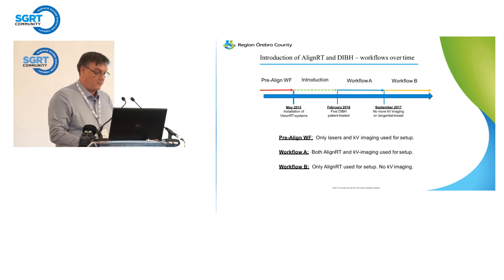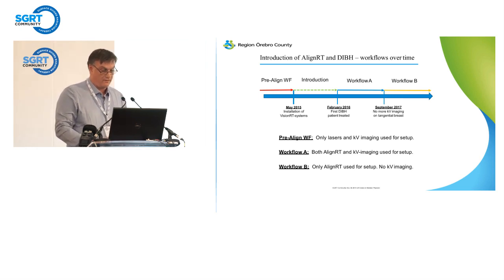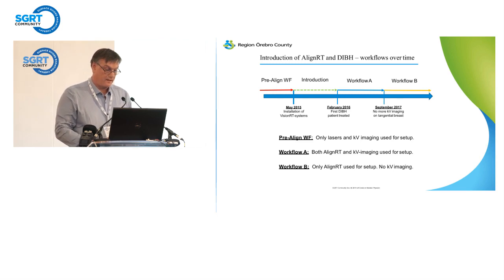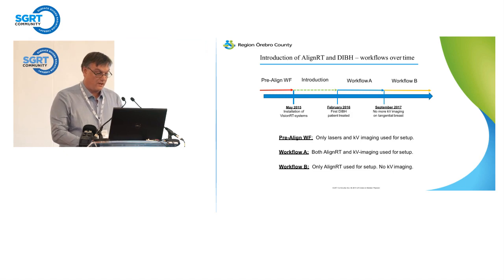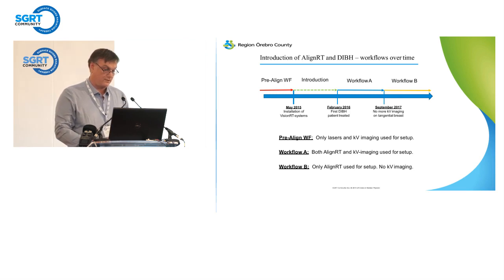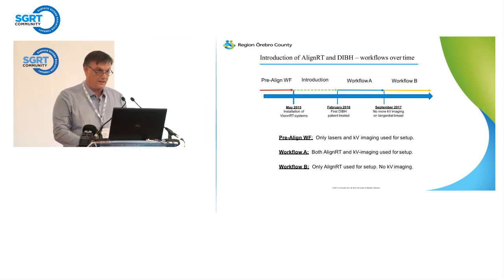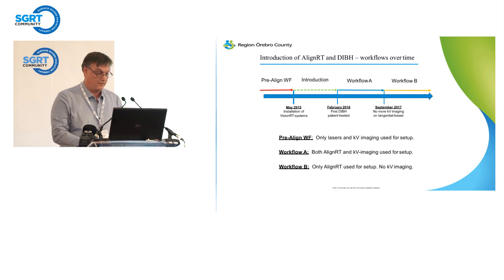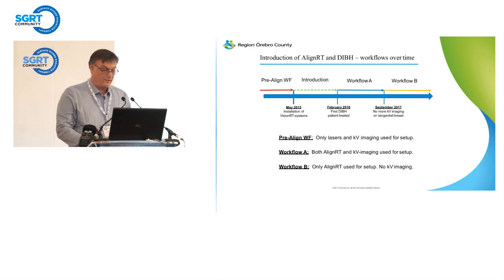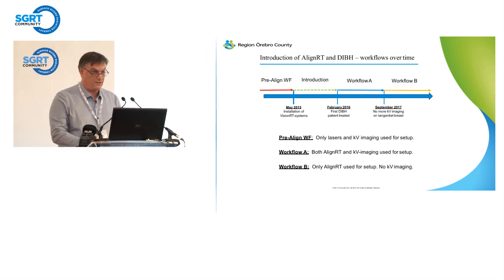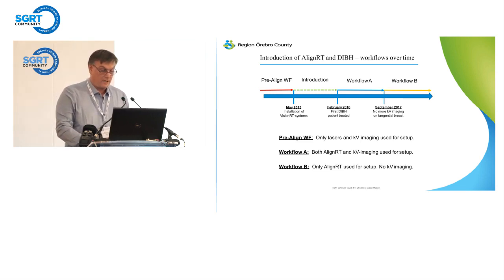This shows a timeline of how we introduced the use of AlignRT in our workflows regarding breast patients. In May 2015, we had our systems installed. We had an introductory period where we were testing out our workflows and trying to find out how to work best with the systems. In February 2016, we treated our first DIBH patient, and this was our first focus — we wanted to use the AlignRT system to get DIBH working. Then in September 2016, we stopped doing KV imaging on our tangential breast patients.